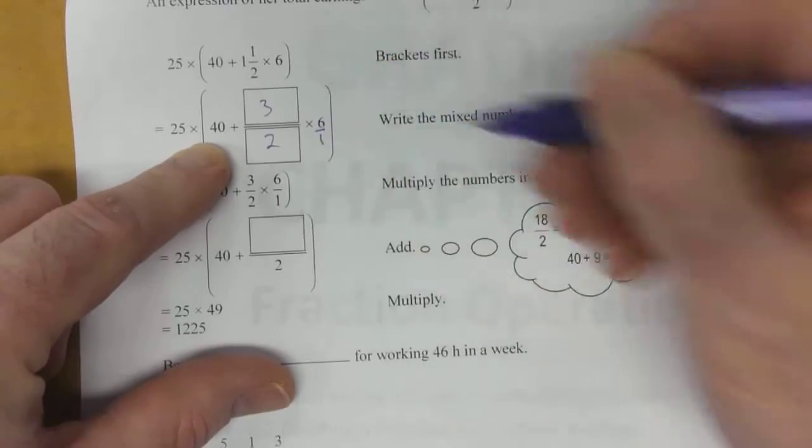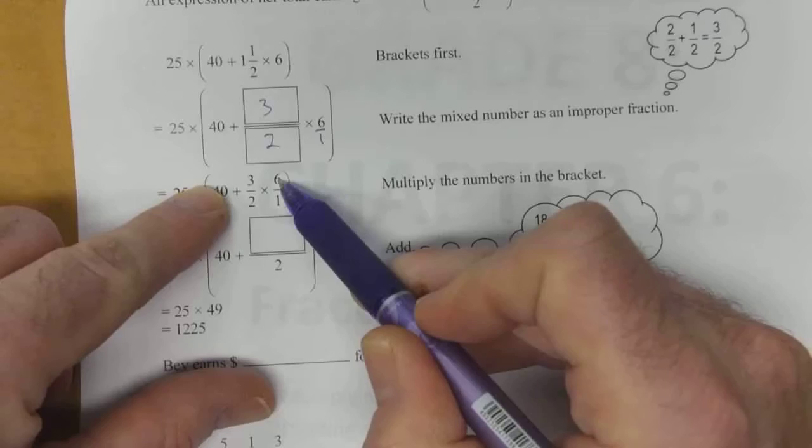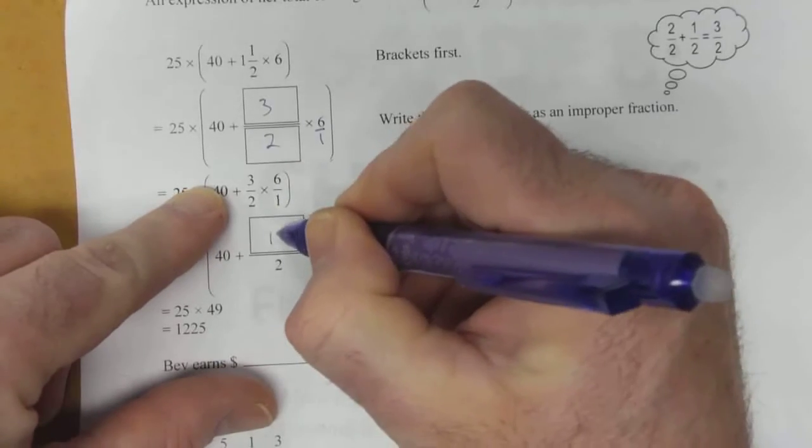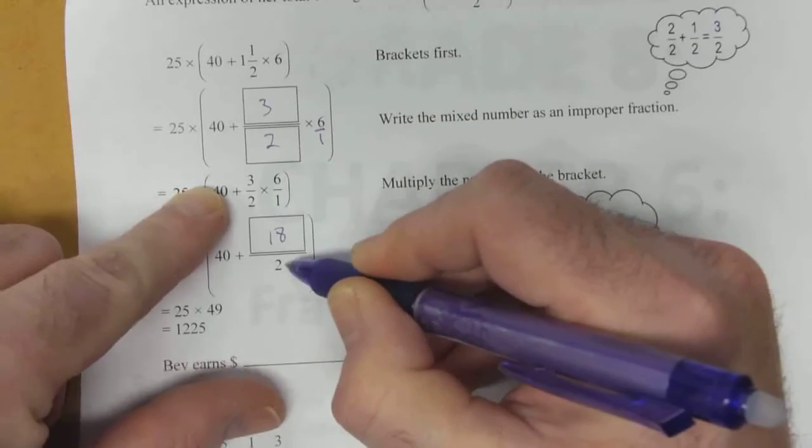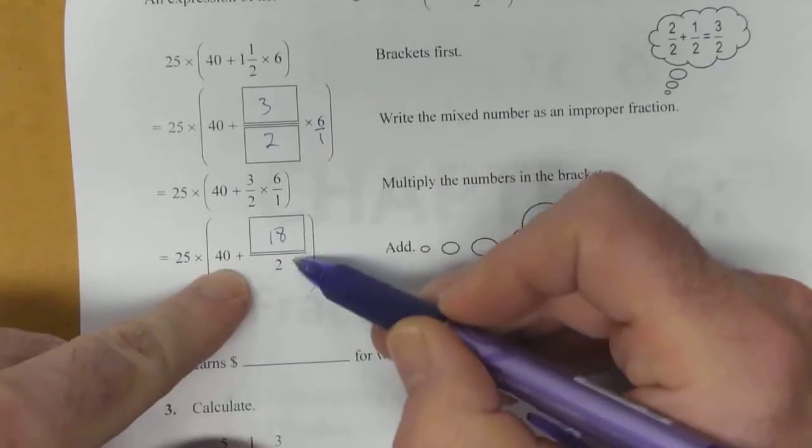6 is the same as 6 over 1. So multiply the tops together. 3 times 6, which gives you 18. And the bottom, 2 times 1, gives you 2. So now we've got this 40 plus 18 over 2.